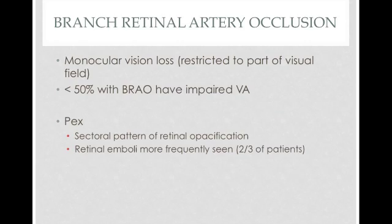A branch retinal artery occlusion is a variation of central retinal artery occlusion. The clot in this case is more distal, so you still get vision loss but it's not as profound. There's usually a section of the visual field that's missing. You're able to see retinal emboli more frequently, which makes sense because if the clot is more distal it should show up on the fundoscopic exam. If it's more proximal, it could still be in the central retinal artery and you're unable to appreciate it.